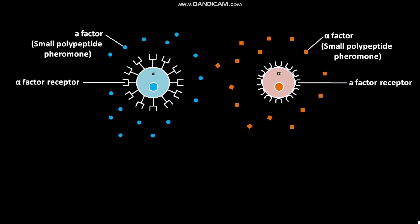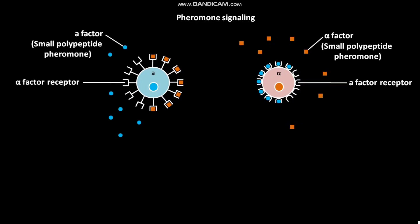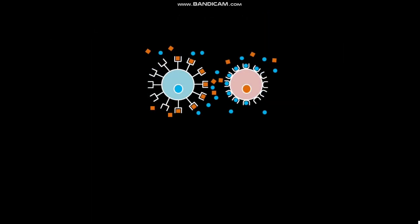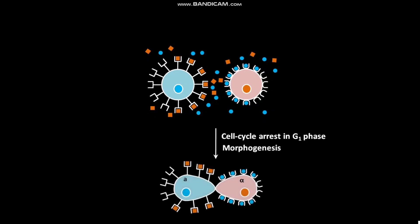Initially, A factors bind to A factor receptors on the surface of alpha cells, while alpha factors bind to alpha factor receptors on the surface of A cells. This binding is called pheromone signaling. Due to this pheromone signaling, both A cell and alpha cell come closer to each other. The cell cycle then arrests in G1 phase and morphogenesis occurs, bringing the A cell and alpha cell into contact with each other.